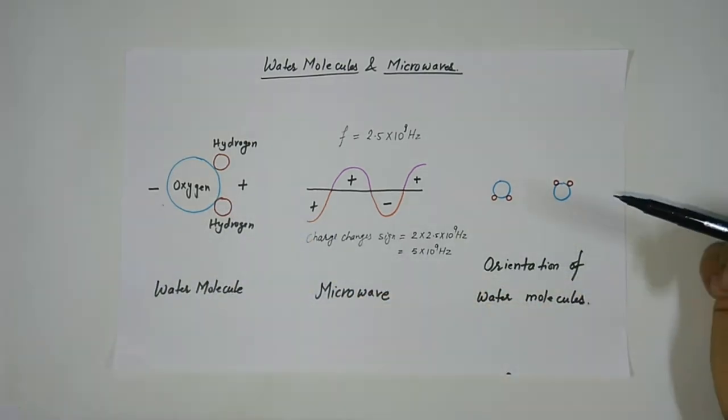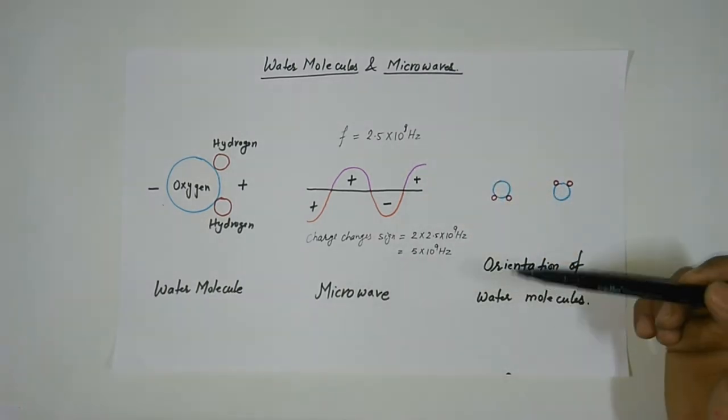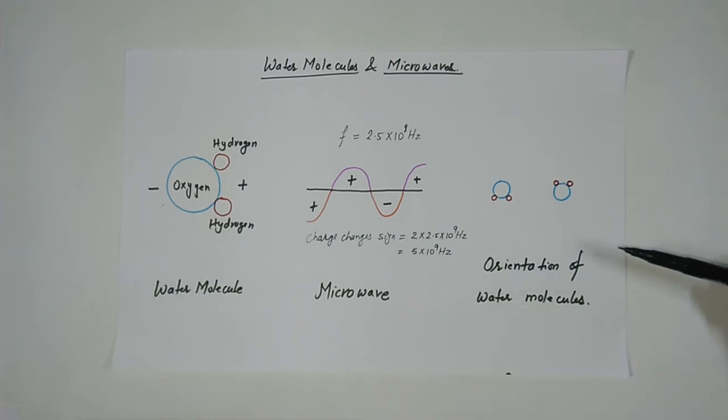Now for a microwave oscillating at 2.5 billion Hertz, the charge changes sign nearly 5 billion times a second. When these radiations interact with a water molecule it causes the molecule to flip back and forth 5 billion times a second. This vigorous movement of the water molecule raises temperature of water and heats the surrounding food.